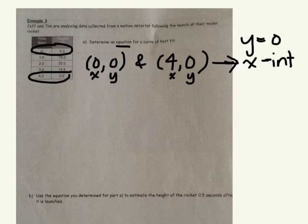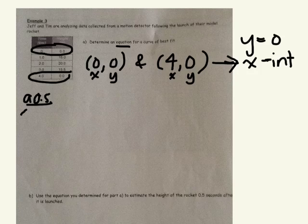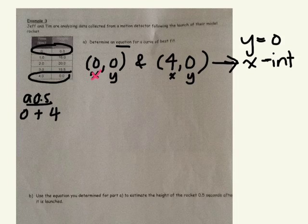If you know the x-intercepts, can you find the axis of symmetry? We know that halfway between the two x-intercepts is your axis of symmetry. So where is my axis of symmetry located? We're going to add our two x-intercepts, so 0 plus 4. Those are the two x-intercepts. This is where the parabola hits the x-axis.